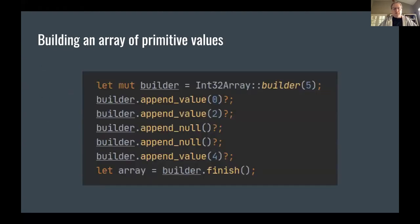Here's a trivial code sample of building an Arrow array. In this case we're building an array of 32-bit ints. We create a mutable builder and specify that it's a fixed size. Then we can go ahead and append values or append null to that array, and then call finish to give us an immutable Arrow array.